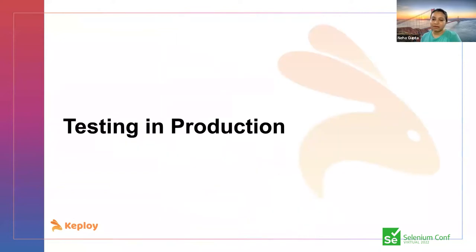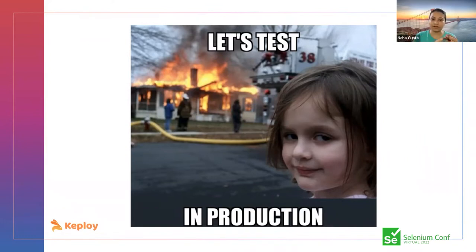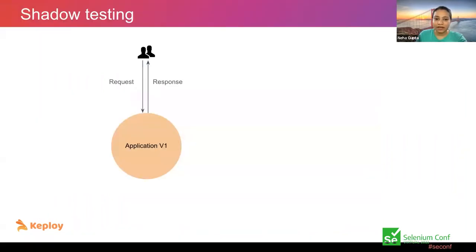Someone told us, 'Why don't you test in production?' — and we thought they were crazy. But when we actually deep-dived and explored more about testing in production, it actually made sense. When we talk about automating testing, we want the best possible simulation of the production environment. If we can test in production, that's the best-case scenario. So we explored how people are testing in production today, and discovered methodologies like record/replay, shadow testing, and tap-and-compare.